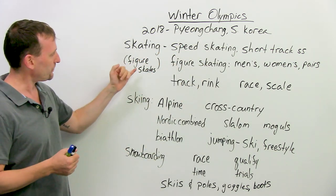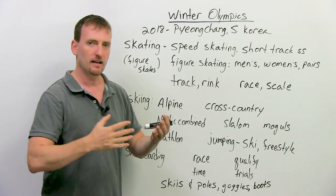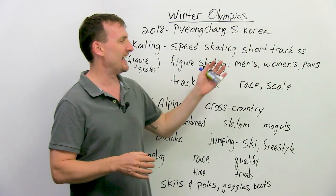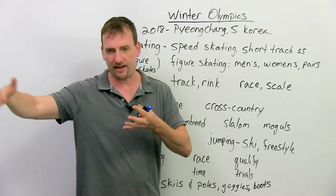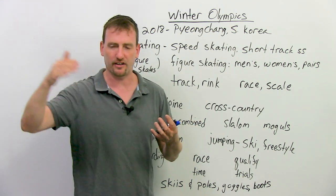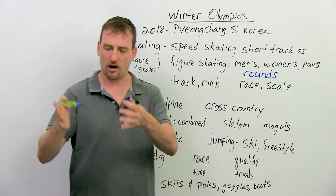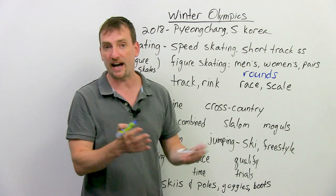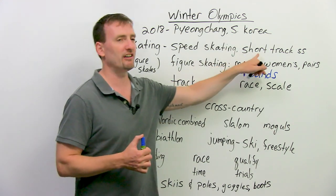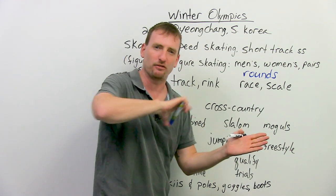Let's start with skating. There are different events for skating. There's speed skating, which happens around a long oval track, and people basically race each other. Then there's short track speed skating, which is almost like a little circle, and you have five or six guys who basically race, trying to finish first. They have different rounds, and the top two of each race go to the next round until you have the final, where the winner gets gold, second place gets silver, and third gets bronze.